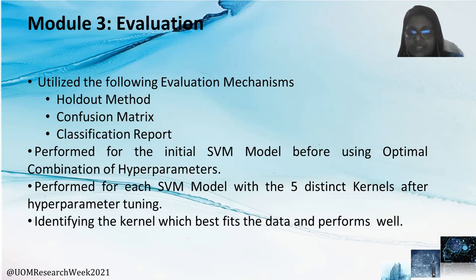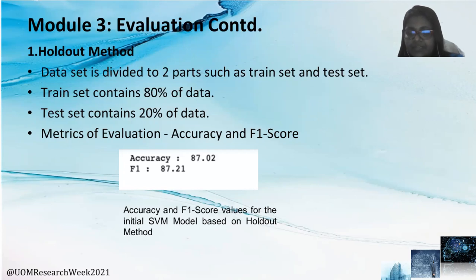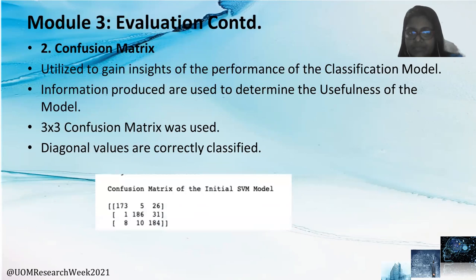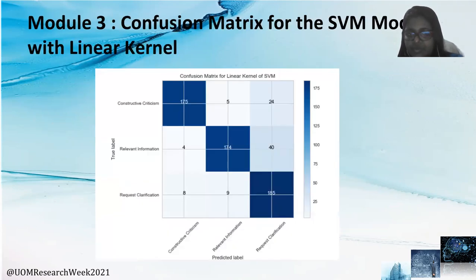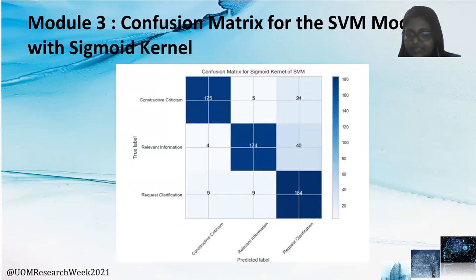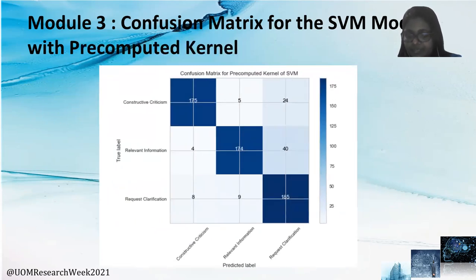The holdout method gave accuracy levels at each step, and summarized results are shown in the table. From this table, the RBF kernel shows the highest accuracy. Confusion metrics were used to gain insight into the performance of the classification model. This diagram shows the confusion matrix of the linear kernel, followed by the RBF kernel, polynomial kernel, sigmoid kernel, and pre-computed kernel.